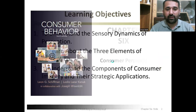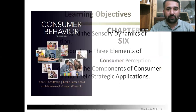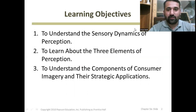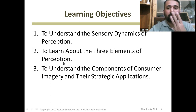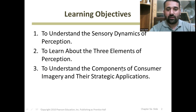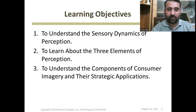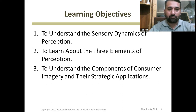So without any delay, let's move to our next slide on consumer perception. These are our learning outcomes for the current video: we will understand the sensory dynamics of perception, then learn about the three important elements of perception, and after that we will understand the components of consumer imagery and their strategic application. Keep those three points in mind.